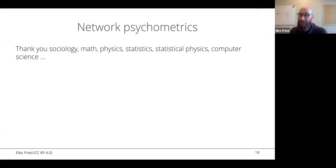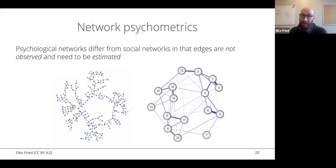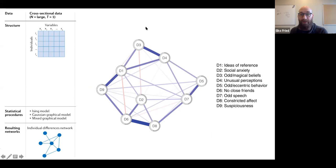Thank you to all the disciplines whose tools we use — psychologists have strong psychometricians, but many of our methods are adopted from other disciplines. The networks I'll talk about today are estimated from data, and in that sense they differ from the social networks shown before. We know the nodes and the mean of a person on a given variable, but we do not know how suicidal ideation and sad mood hang together statistically — we need a model to estimate that relation.